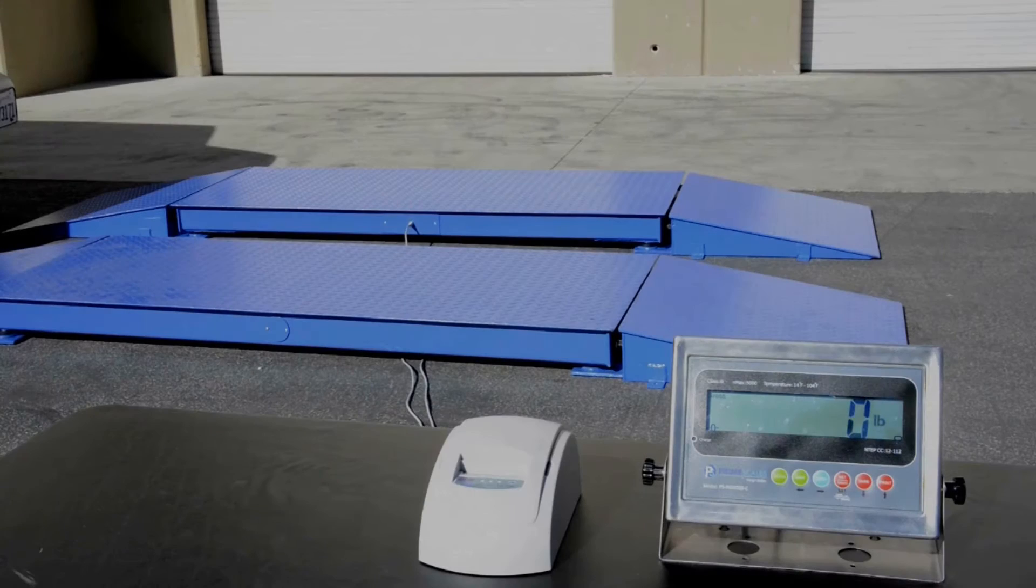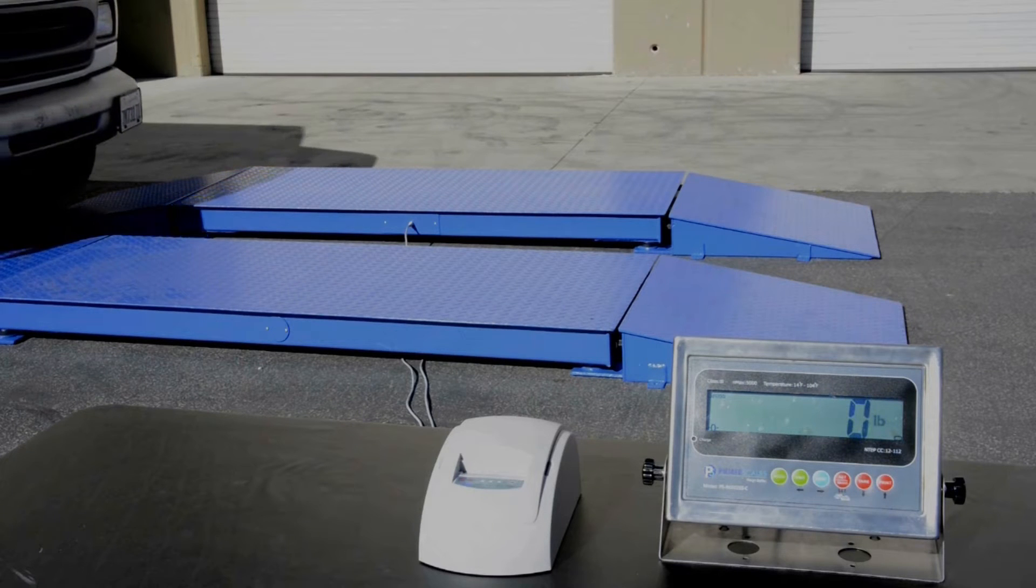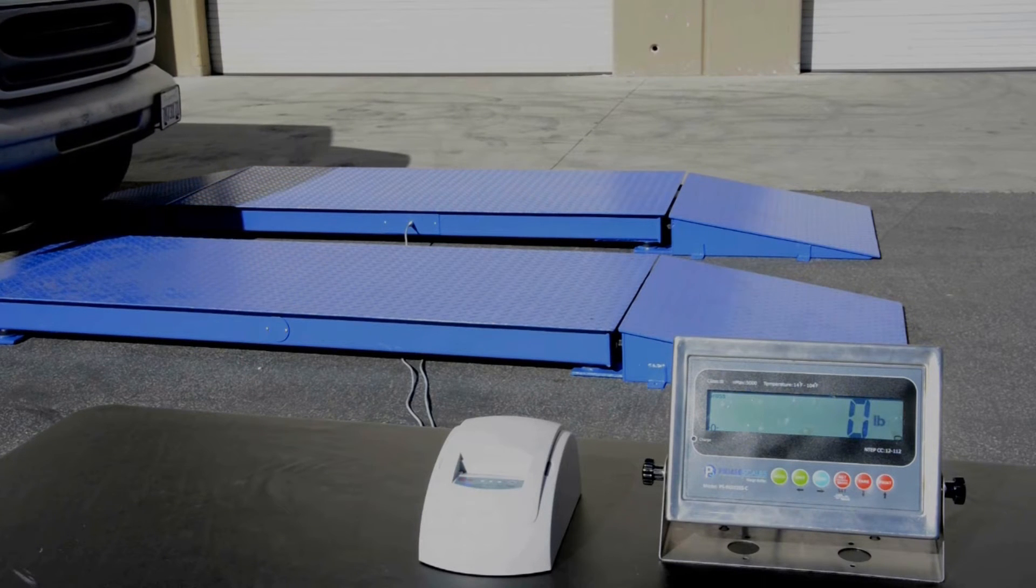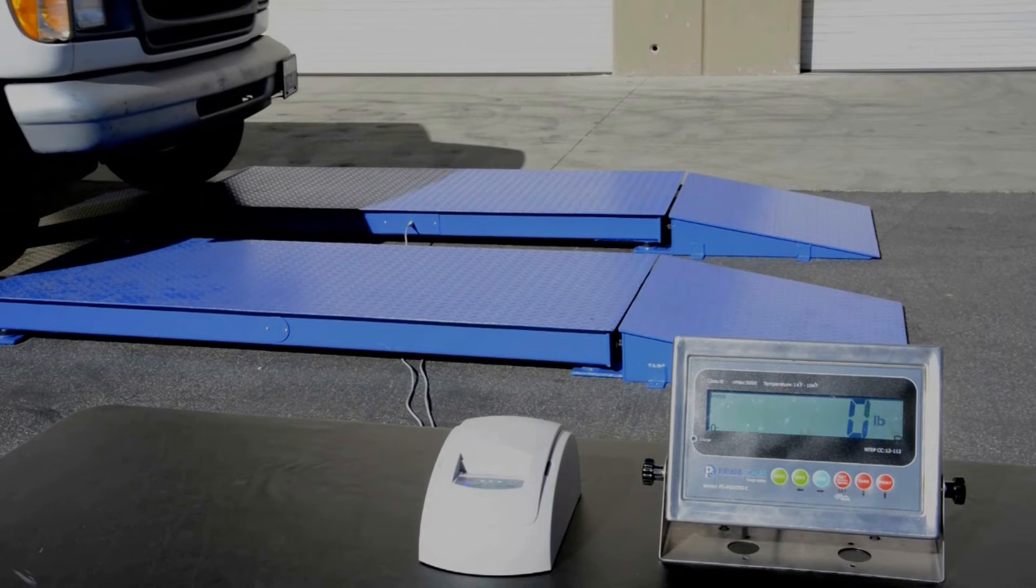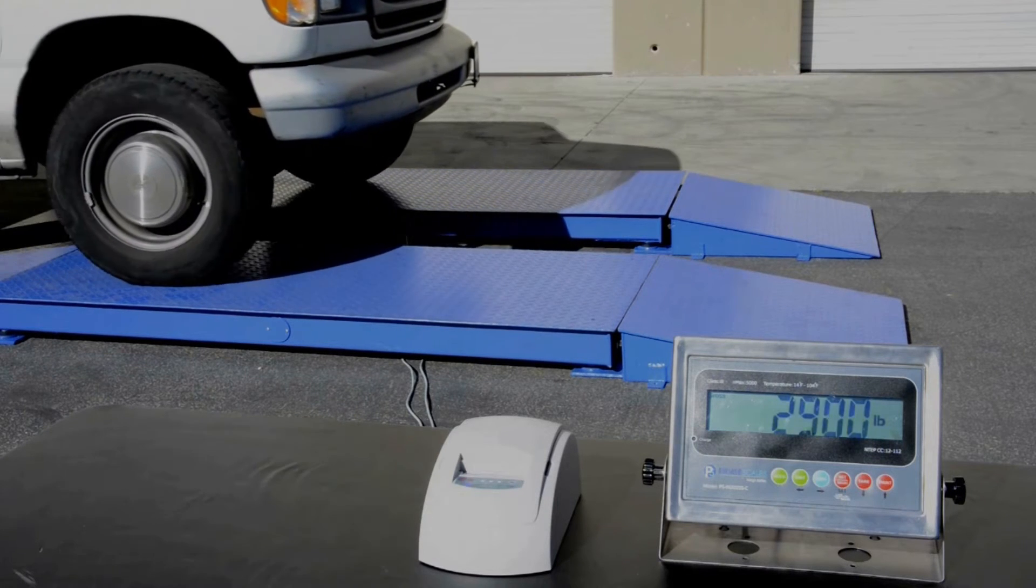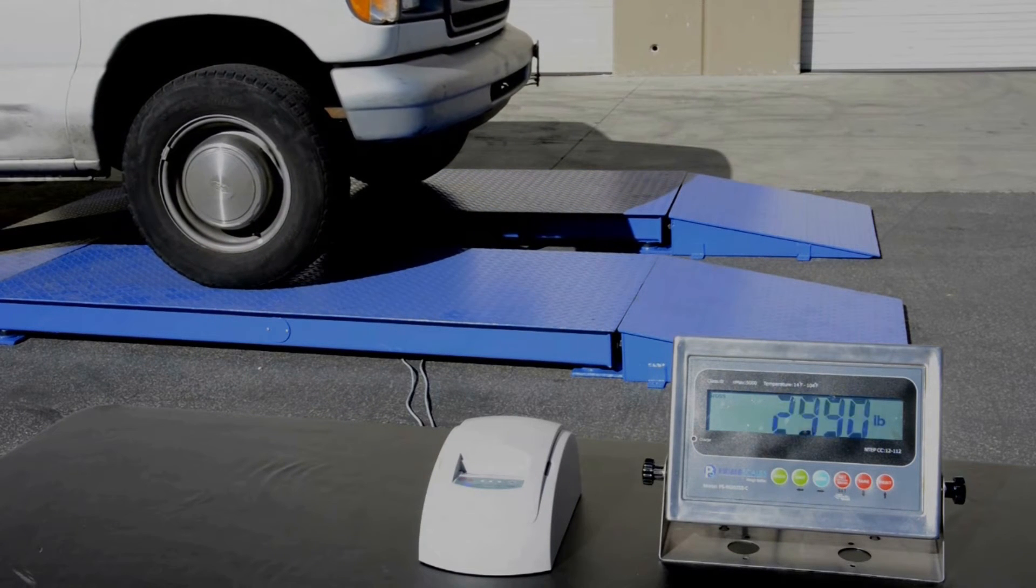Now, we'll show you how to use the scale. Drive on the first axle and stop until it's stable. The indicator will show the weight of the first axle. When it's stable, it will show add 1.